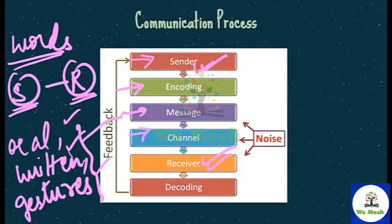After the sender encodes the message, the next element is the channel. The sender has to pick and choose the mode of transmission, which is often inseparable from the message. The channel is a link that connects the sender and the receiver, establishing a connection between these two parties. Air, sight, and sound are important communication channels. The receiver must be considered while selecting a channel, as some people respond better to formal letters while others respond well to informal spoken words. Channels officially recognized by the organization are known as formal channels.